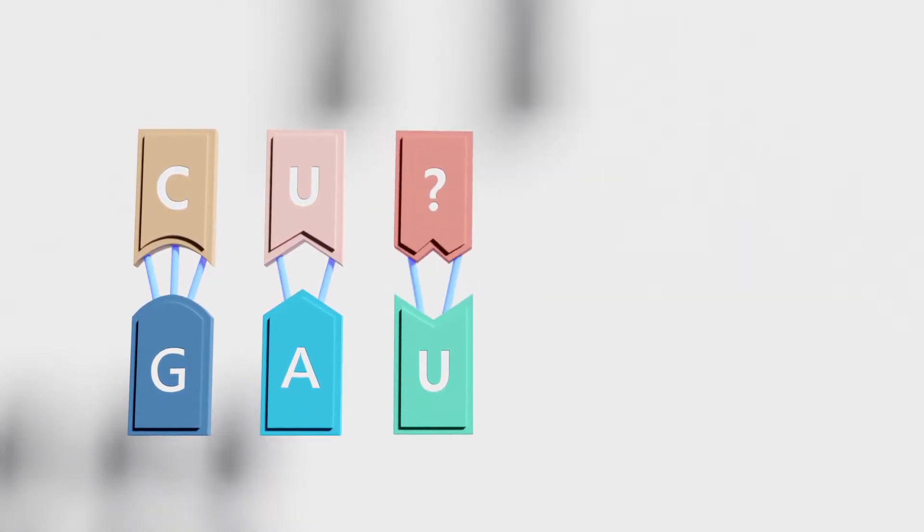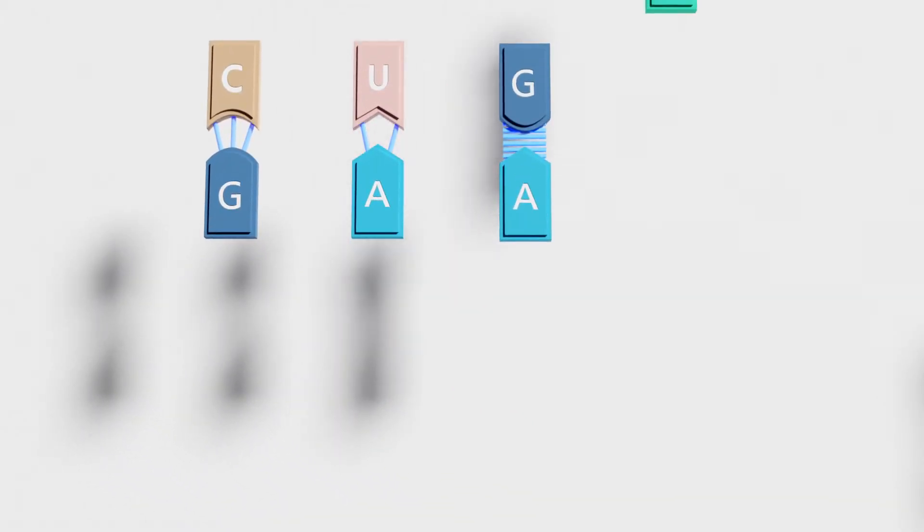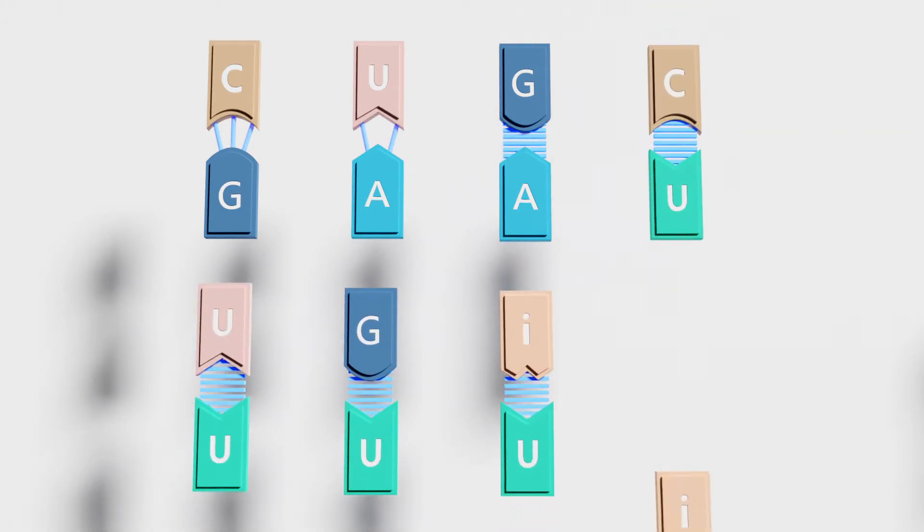Aside from the usual A-U and G-C base pairing, Crick suggested that the third nucleotide might also observe those between G and A, C and U, U and U, G and U, I and U, or I and A.